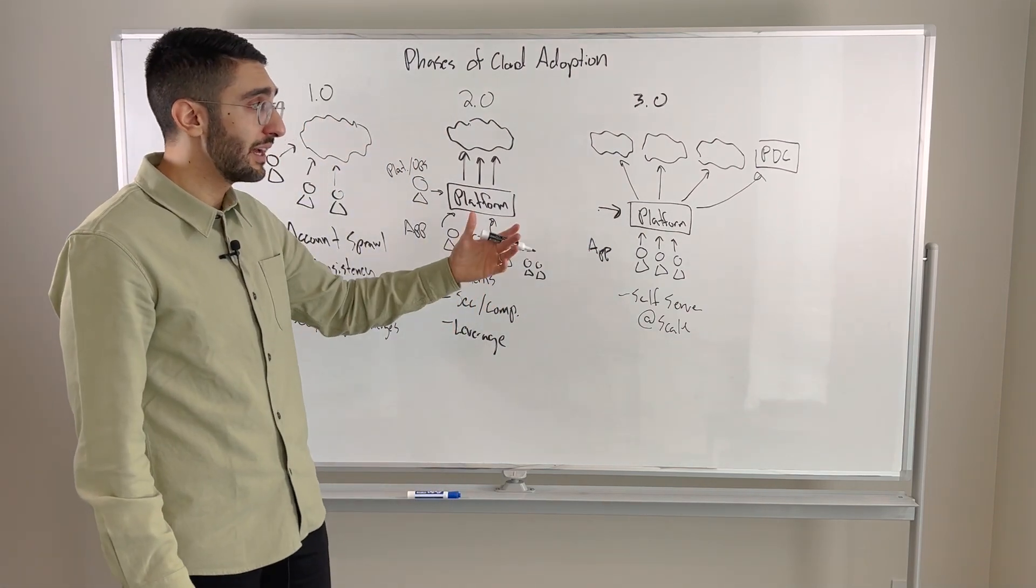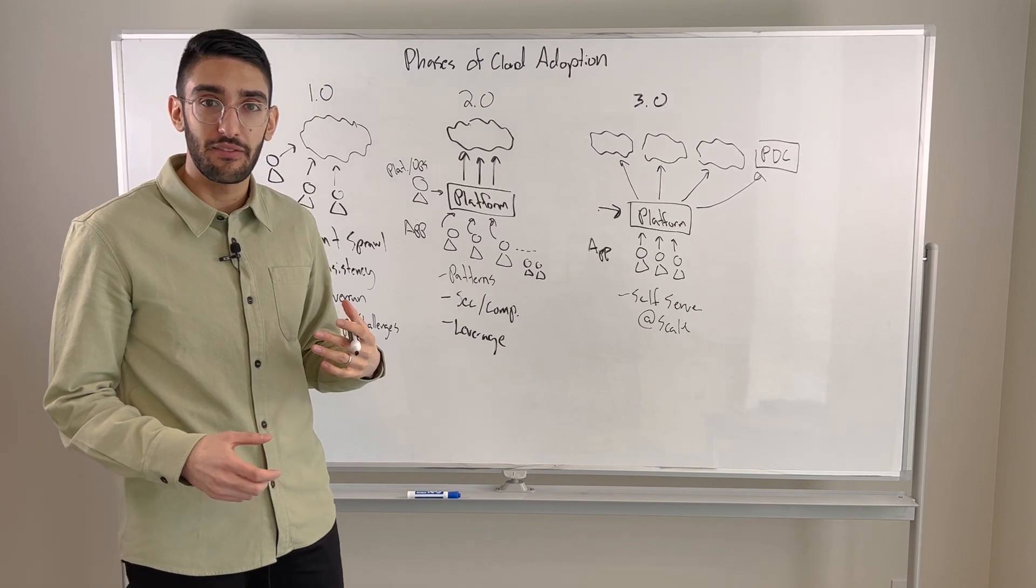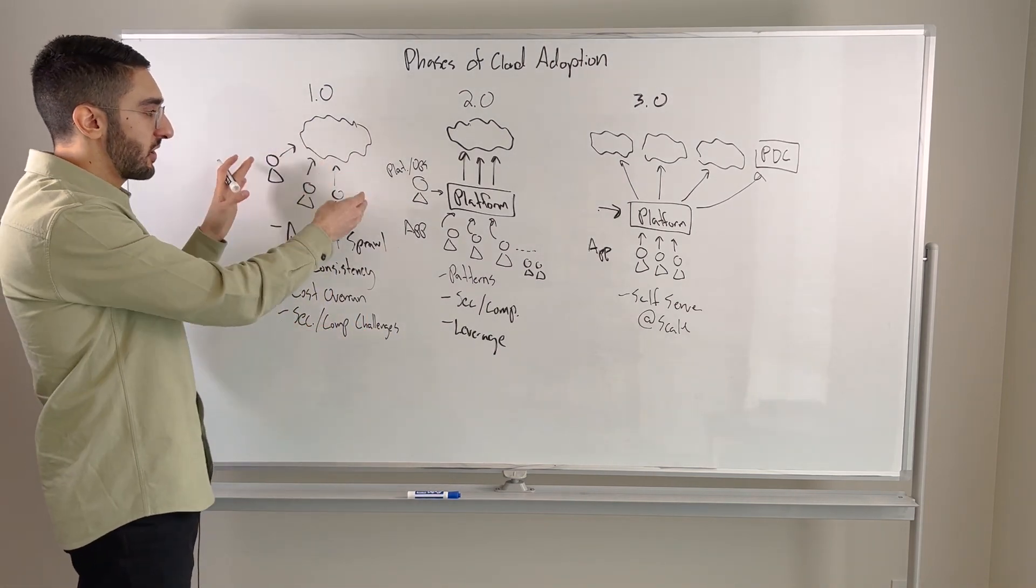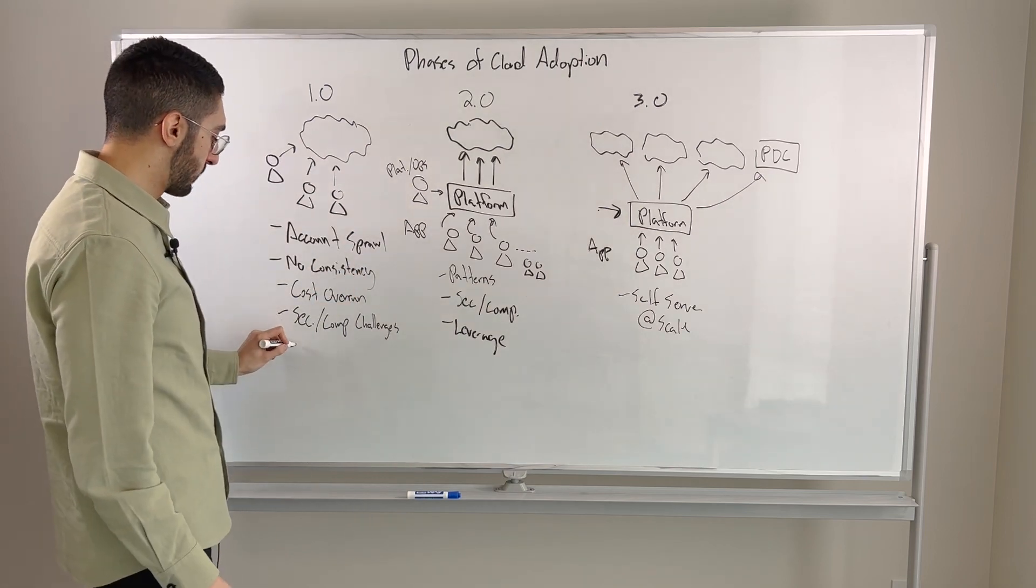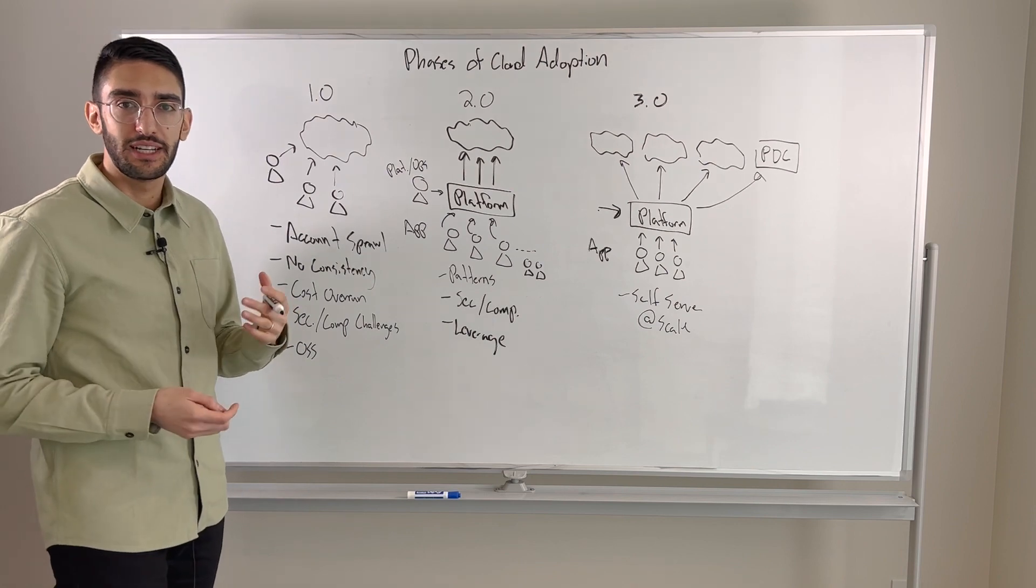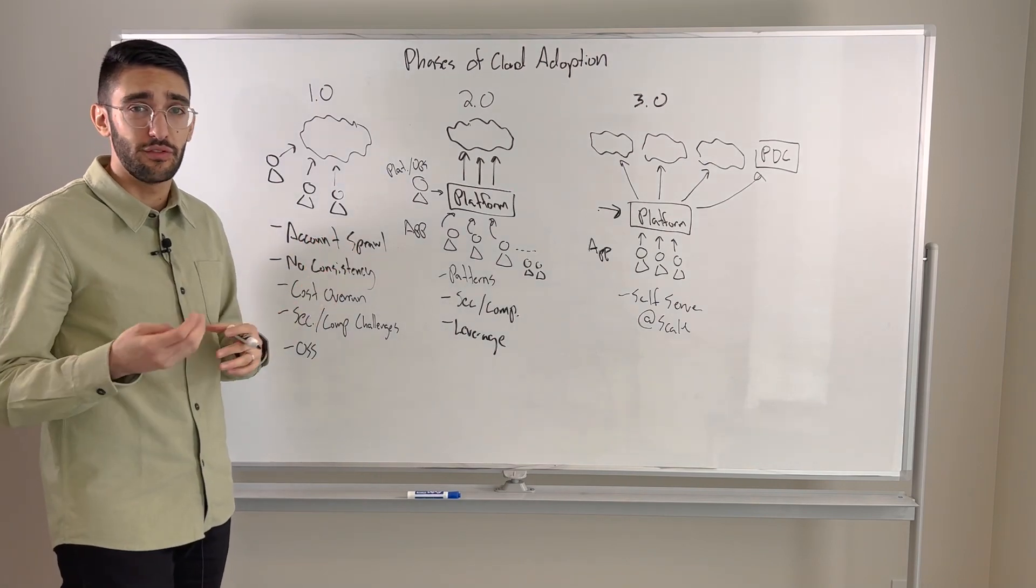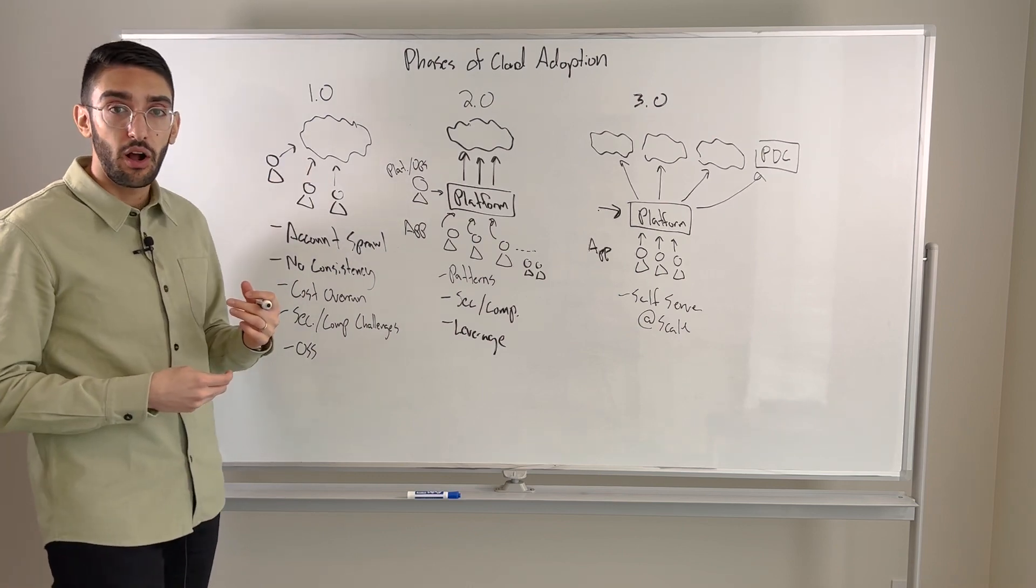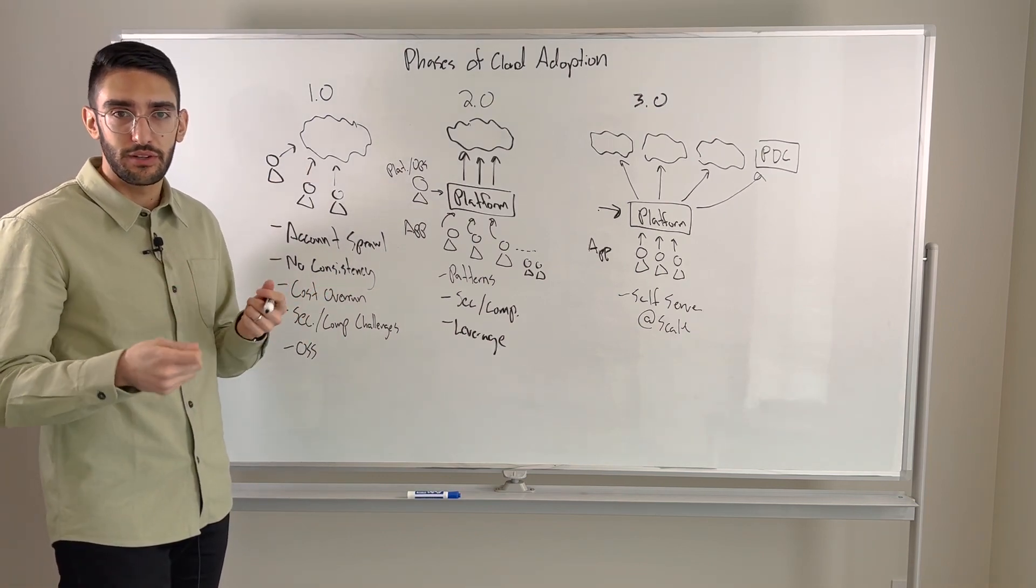And so if I overlay this with how this tends to be a conversation with HashiCorp and our tooling, oftentimes organizations start adopting our open source in this sort of 1.0 motion. Development teams might pick up tools like Terraform to start provisioning infrastructure, Vault to manage secrets and put it in their CICD pipelines. Maybe they're using Consul to enable discovery between their different applications.